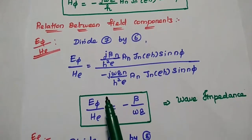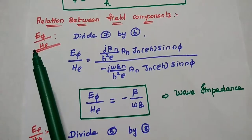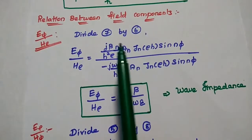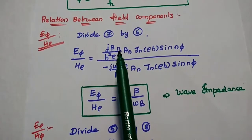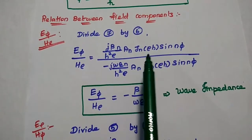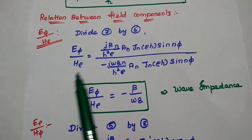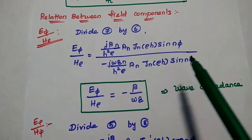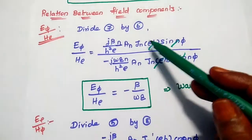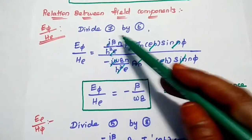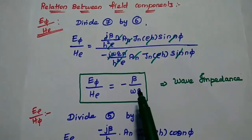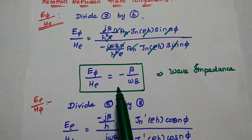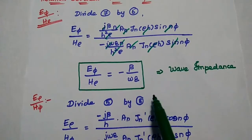Next we are going to discuss the relation between field components. We take the relation between E phi and H rho by dividing the seventh equation by the sixth equation. E phi value is J beta N by H square rho AN JN of rho H sin N phi, divided by H rho value minus J omega epsilon N by H square rho AN JN of rho H sin N phi. Simplifying, we get E phi to H rho equal to minus beta by omega epsilon. The ratio of electric field to magnetic field is known as wave impedance.